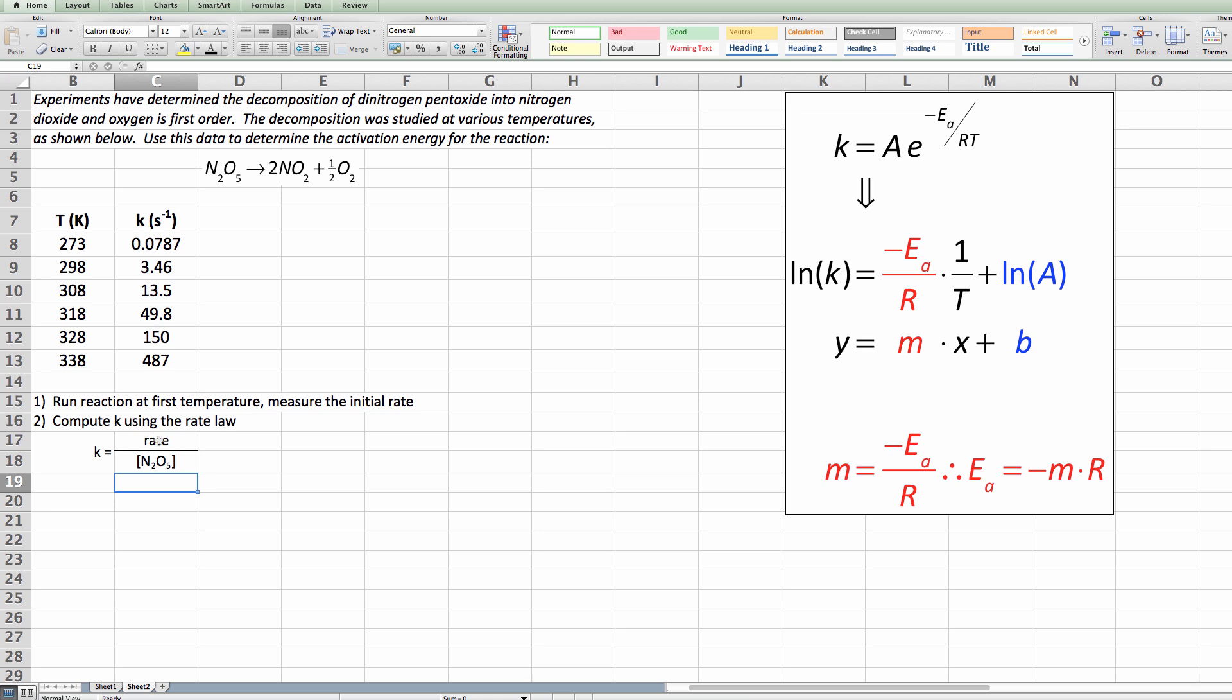Our K, our rate constant, is equal to the rate divided by N2O5 and that's how each one of these would be computed. You would first run the reaction at this temperature, measure the rate, then compute the rate constant. All right, that under the bridge, we now have a chance to analyze this data properly.